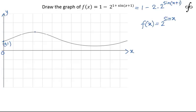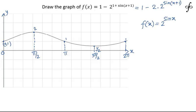Putting x = π/2 gives 2^(sin π/2), which is 2. Then putting x = 3π/2 gives 2^(sin 3π/2) = 2^(-1) = 1/2. And at x = 2π, we get 2^(sin 2π) = 2^0 = 1.